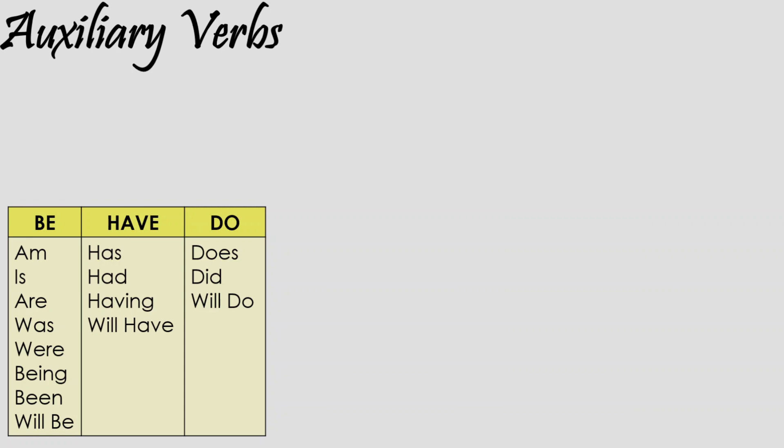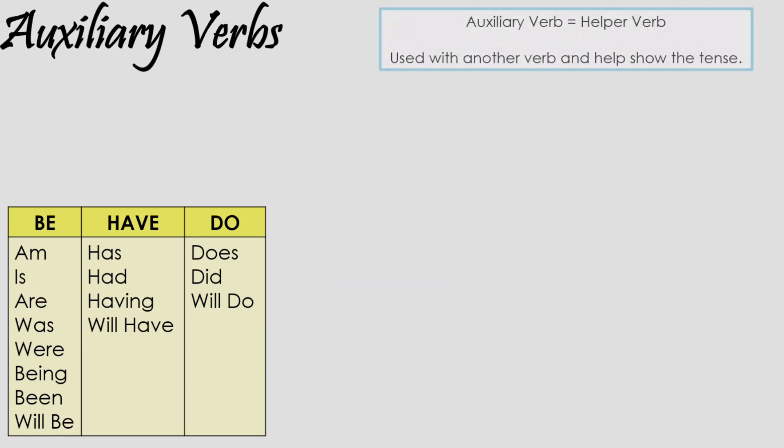So for example, for 'do' you have 'does', 'did', and 'will do' — the different tenses. An auxiliary basically means to provide extra help, and that's exactly what auxiliary verbs do. Most of the time, auxiliary verbs are used in combination with other types of verbs, and they are used to help show things such as the tense of a sentence.